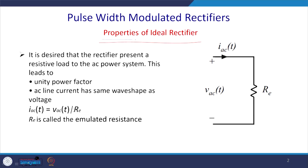We require to rectify it. Once we rectify it with the diode bridge rectifier or the controlled rectifier, we also inject harmonics. The properties of the ideal rectifier are: it is desired that a rectifier presents a resistive load to the AC power system, which leads to unity power factor operation. Another property is that the AC line current has the same wave shape as the voltage, since IAC equals VAC divided by RE, where RE is the emulated resistance.